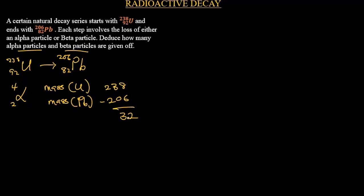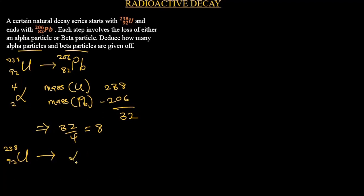To determine how many alpha particles were given off to produce this change in mass number, we divide by 4, because anytime we release an alpha particle there is a decrease in mass number by 4. So we divide 32 by 4 and we get 8. That means 8 alpha particles were emitted.